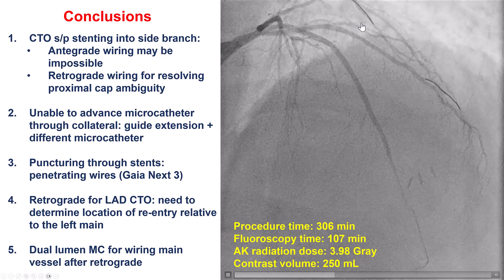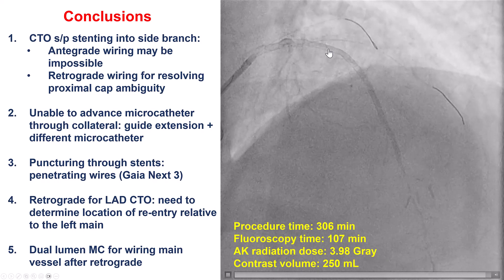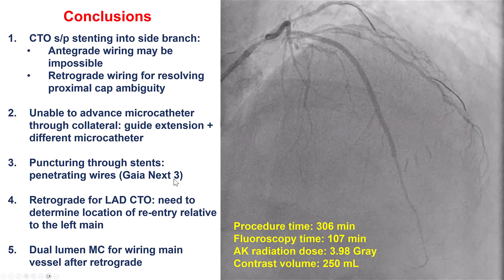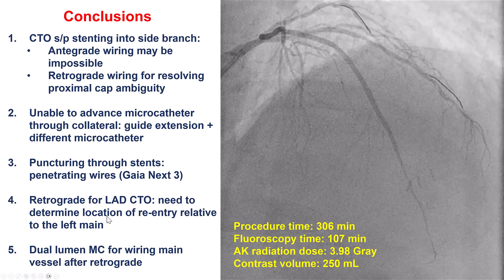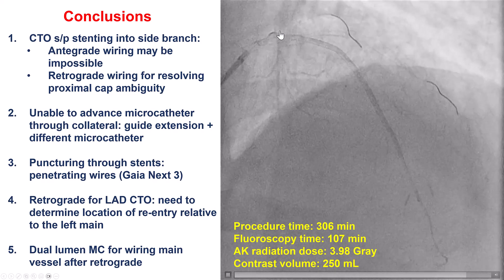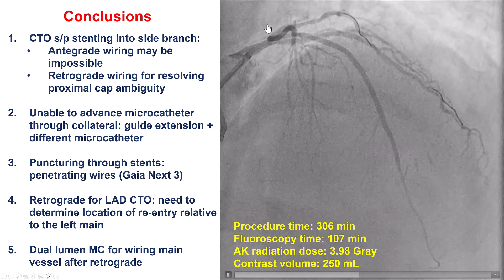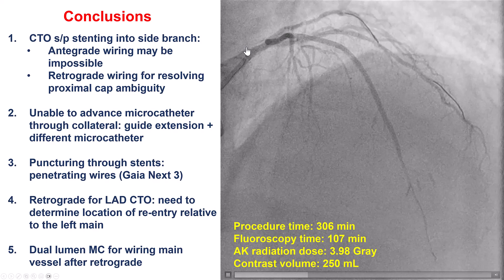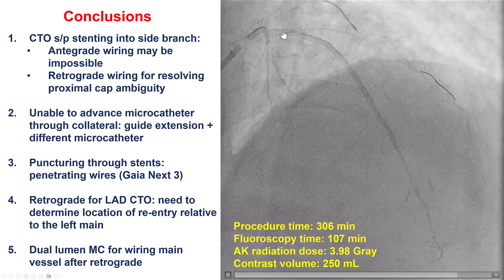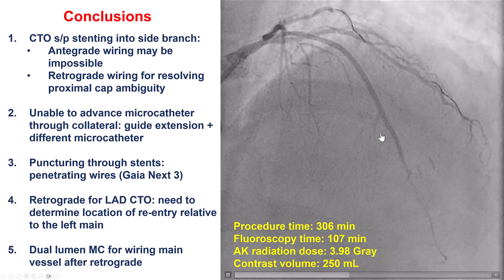The other challenge was puncturing retrogradely into the stent that had been placed into the diagonal. This was very challenging; it took several attempts, but was eventually successful using a GuideFlex X3. Fourth component, and this is extremely important: it is about the location of re-entry. If our re-entry was more proximal into the left main and we placed the stent, we ran the risk of occluding the circumflex and the diagonal. We used intravascular ultrasound and confirmed that the re-entry point was distal to the left main bifurcation, so we did not have issues with patency of the vessels after we placed stents into the LAD.